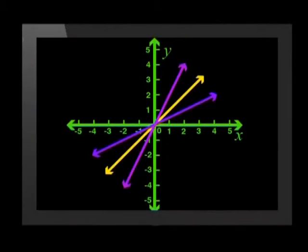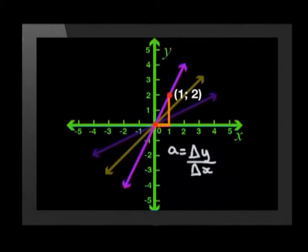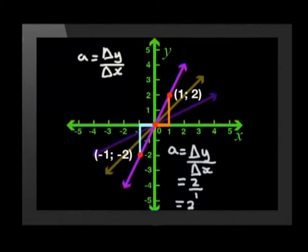Now let's compare the other graphs to the parent graph. We want their gradients — we could work out the formula for each graph and compare a values. On this graph, moving one unit to the right from the origin means we move two units up to reach the graph. So the change in y divided by change in x is 2 divided by 1, which is 2. Moving one unit left and two units down also gives negative 2 over negative 1, which is positive 2.